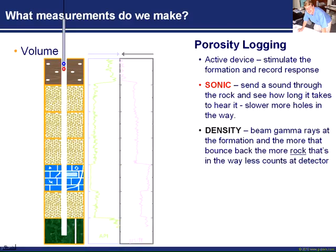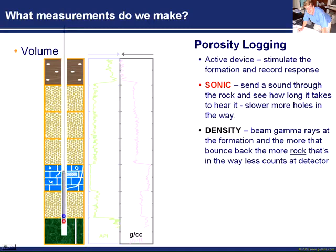The next measurement is the density log. The density log is an active device that beams gamma rays at the formation. These are radioactive particles — gamma rays. If we have a lot of solid rock in the way, we bounce back a lot of those gamma rays. The lower the porosity, the more rock in the way, so the less counts we get at the detector. More rock in the way means lower porosity. So we make a density log measurement.